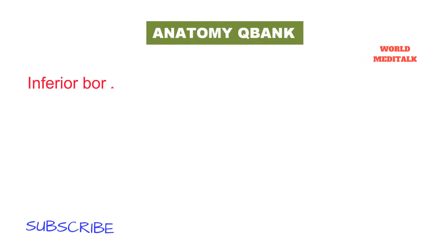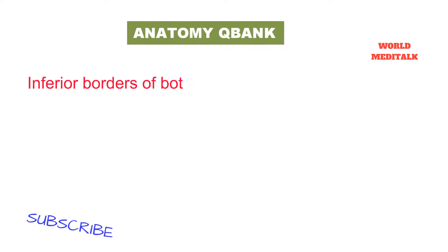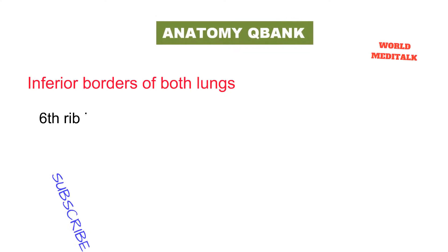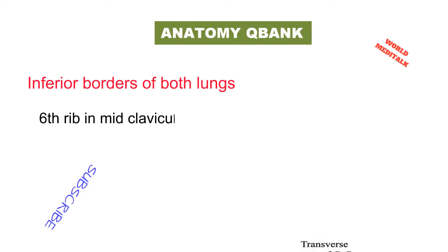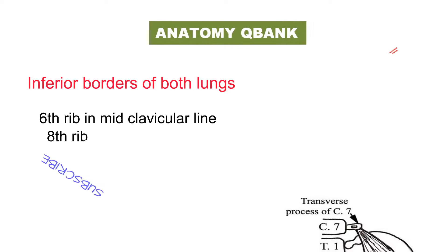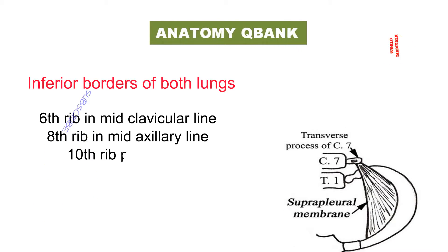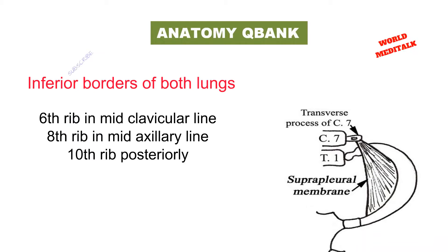The inferior border of both lungs occupies the 6th rib in the mid-clavicular line, the 8th rib in the mid-axillary line, and the 10th rib posteriorly.